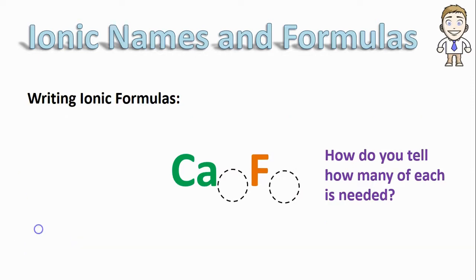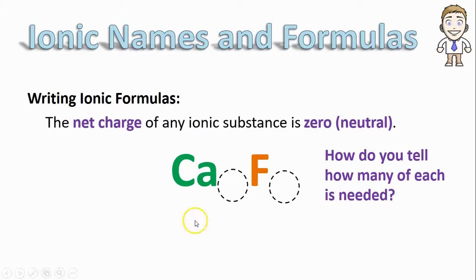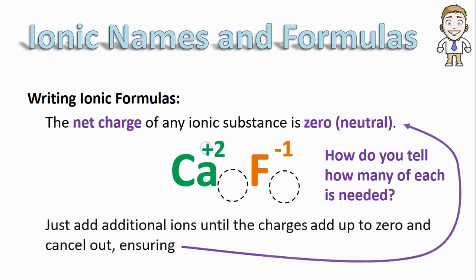To accomplish this, we just have one simple goal. We have to make sure that the net charge, that means the overall charge of the entire substance, is zero. That means it's neutral, not positive and not negative. If I know that my calcium has a +2 and my fluoride has a -1, because those numbers are different, they don't cancel out. They do not add up to zero. So what I have to do is add additional ions, that means more calciums or more fluorides, until the two charges actually add up to zero and cancel each other out.